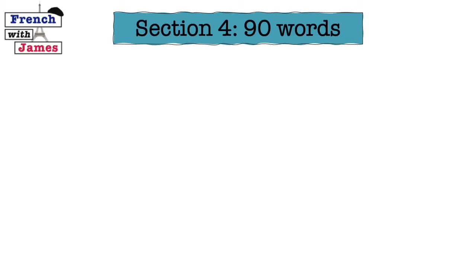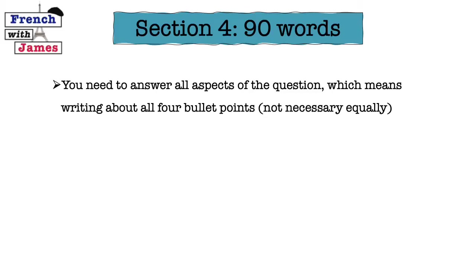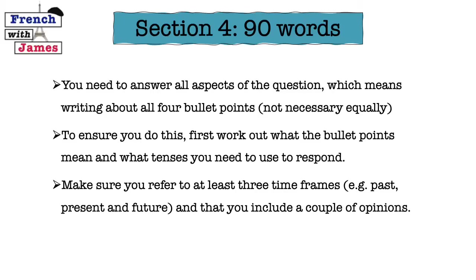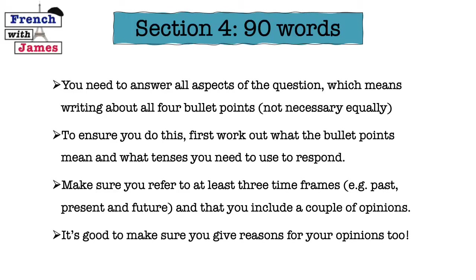That brings us to Section 4, the main focus of this video, because if you can do this well you'll definitely do Section 2 well too. For Section 4 you need to write 90 words, again with four bullet points to refer to. Work out what the bullet points mean, what tenses you need to use, make sure you refer to at least three time frames — past, present, and future — and include a couple of opinions with reasons. If you can improve your exam skills and sit the higher paper, justifying opinions will be crucial for a good grade.